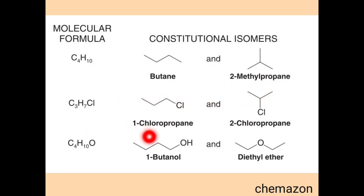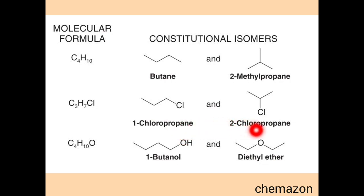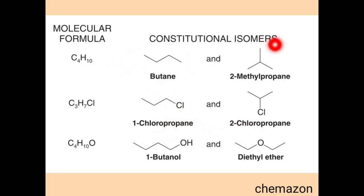The third example is 1-butanol and diethyl ether. You can see that in these two molecules the molecular formula is again the same, but the functional group itself is different — here it is an alcoholic group, and here it is an ether group. Hence these are called functional isomers. We will learn these constitutional isomers in much more detail accordingly.